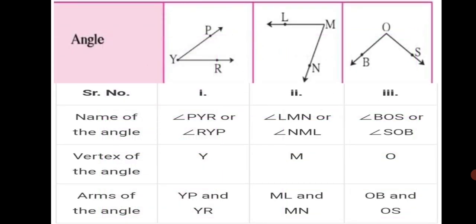First, the name of the angle. The first one is angle PYR or angle RYP. Always start naming the angle with three letters from the arrowhead, then the vertex, then the next arrowhead — in any direction. Name of the second angle: angle LMN or angle NML. Name of the third angle: angle BOS or angle SOB. With a single letter, you can also name the first angle as angle Y, second as angle M, and third as angle O.